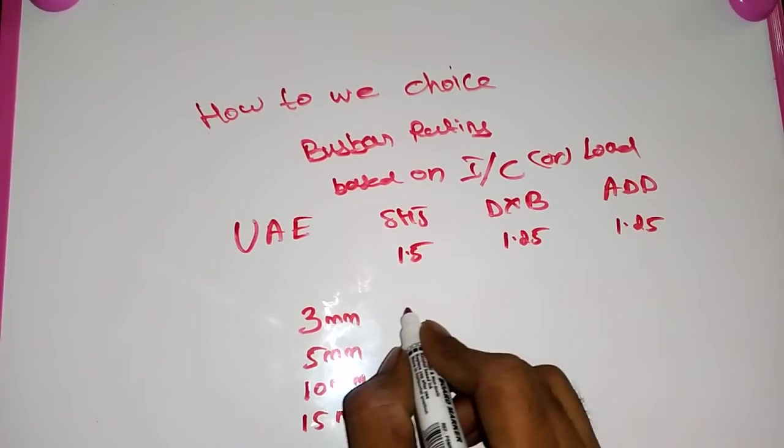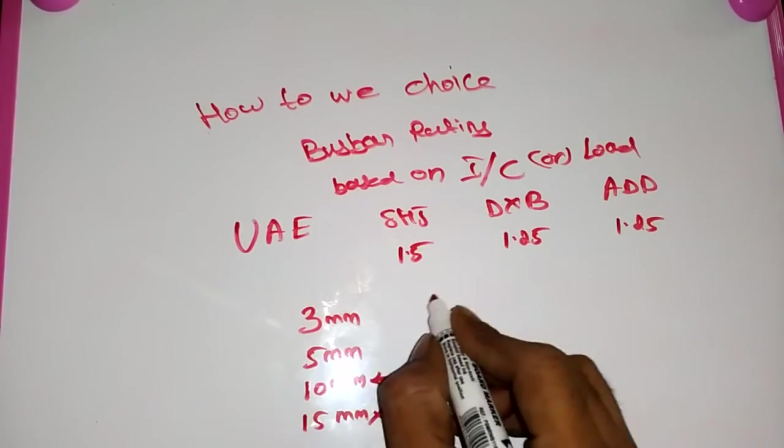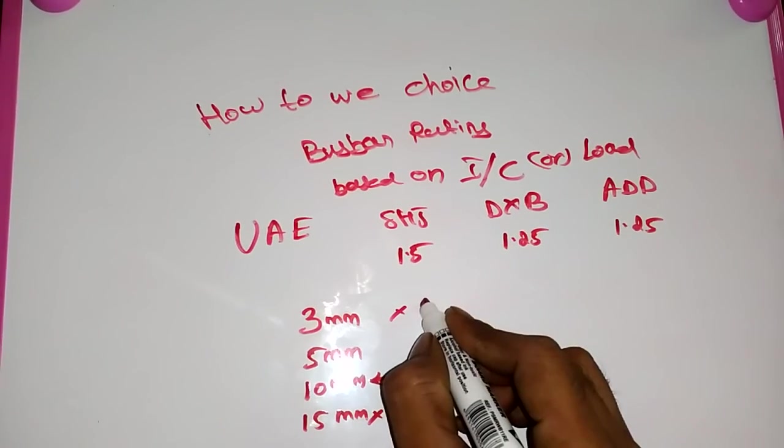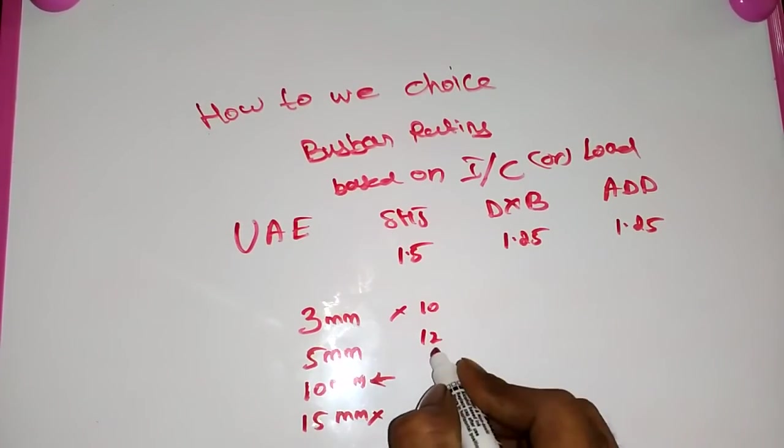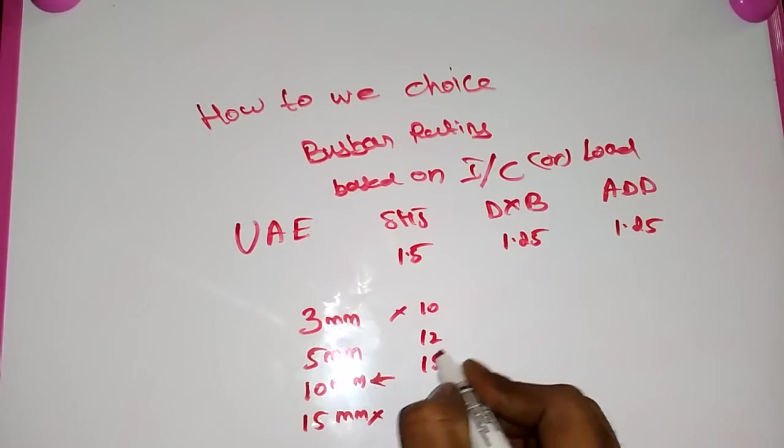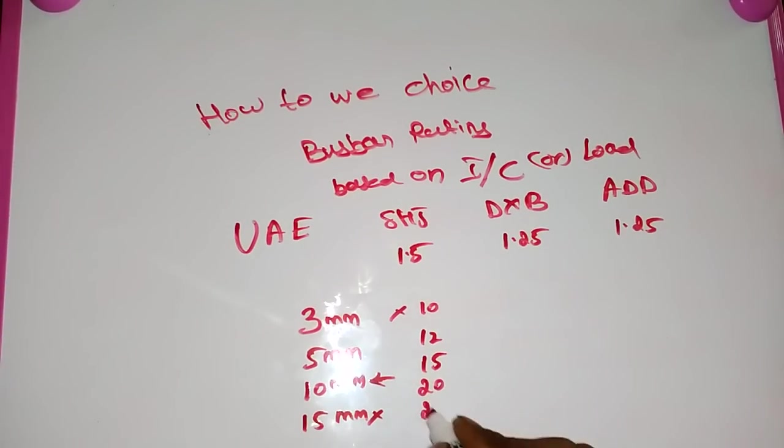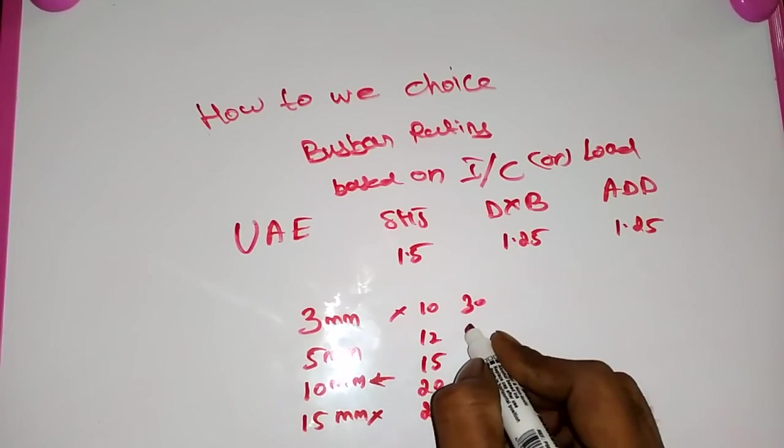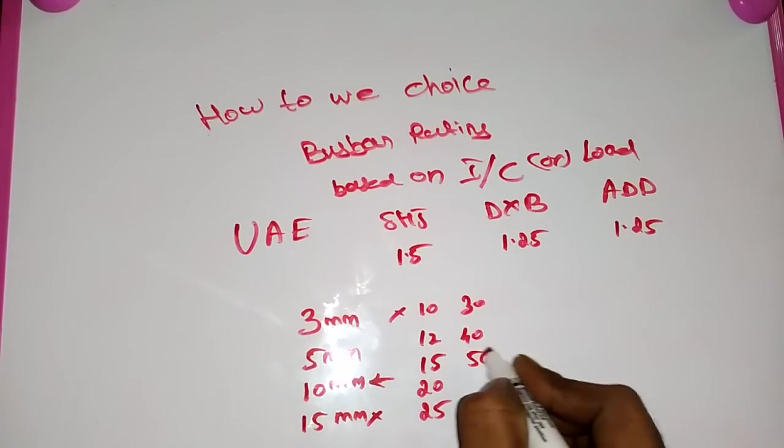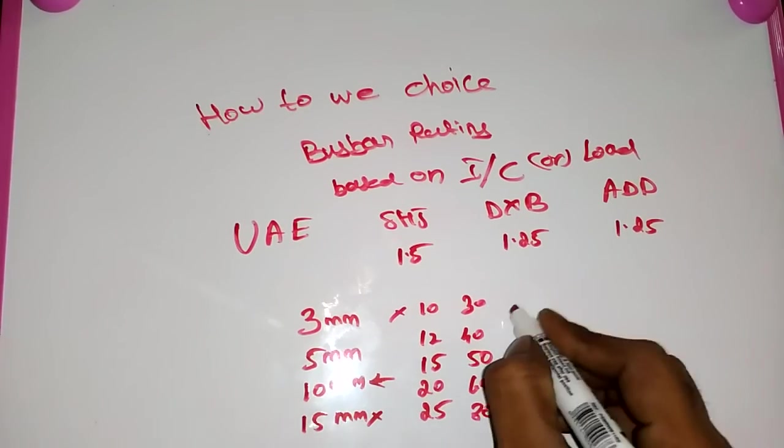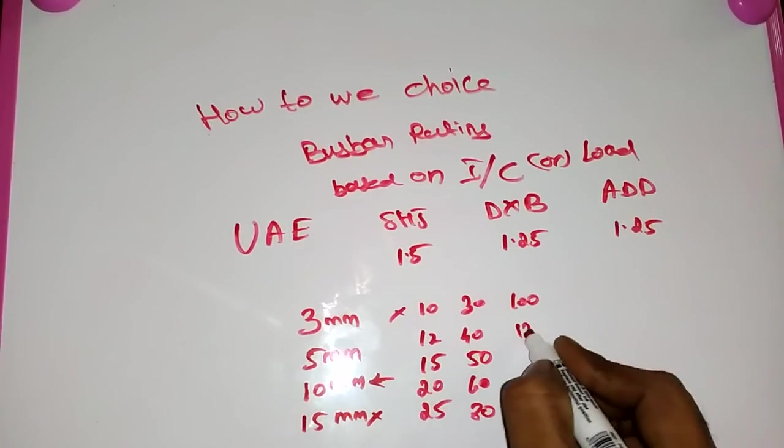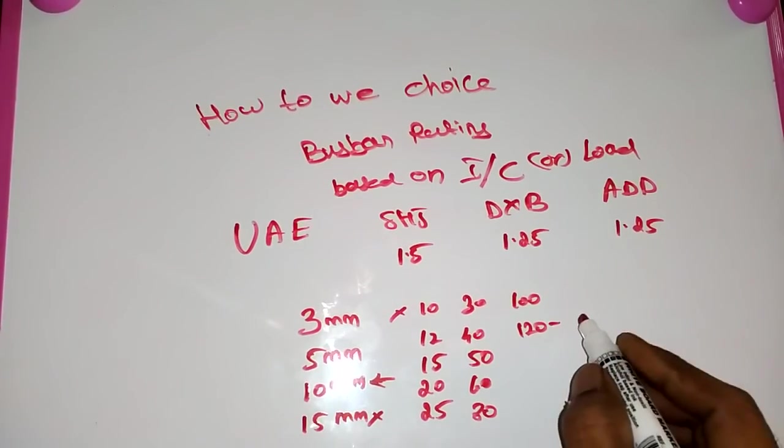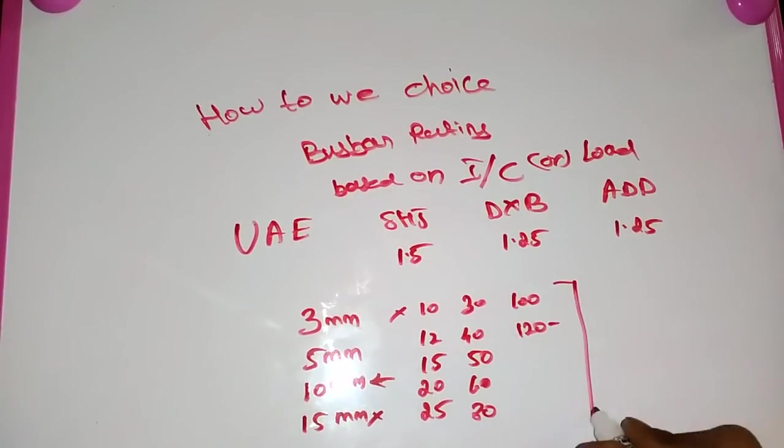The widths are differentiated very big time, that means 10, 12, 15, 20, 25, 30, 40, 50, 60, 80, and 100 and 120, up to 120. Mostly we mentioned in busbar rating.